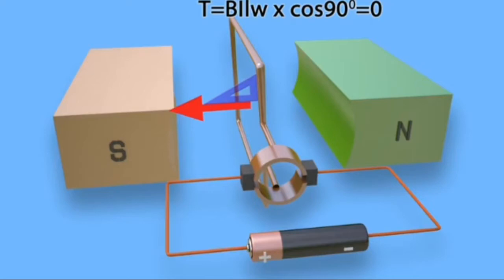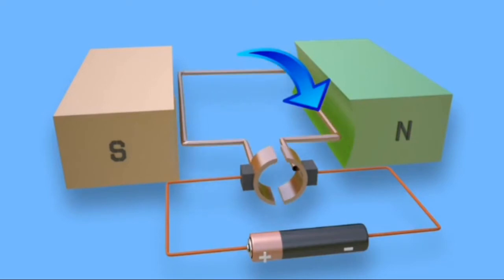After rotation of the turn, the turn comes to vertical position in respect to the magnetic field. At this position there is no current in conductor because the turn conductors and brushes rest between two commutators. Hence, there is no force acting on conductors. But due to moment of inertia, the turn continues to rotate and comes horizontal again.